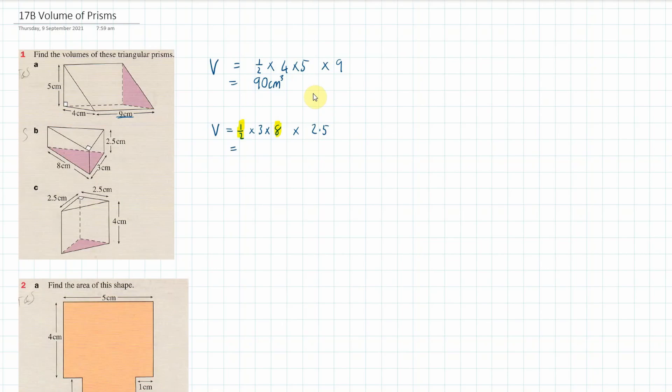4 times 3 is 12. Then 12 times 2.5: 12 times 2 is 24, and 12 times 0.5 is 6. Adding those together gives 30 centimeters cubed.